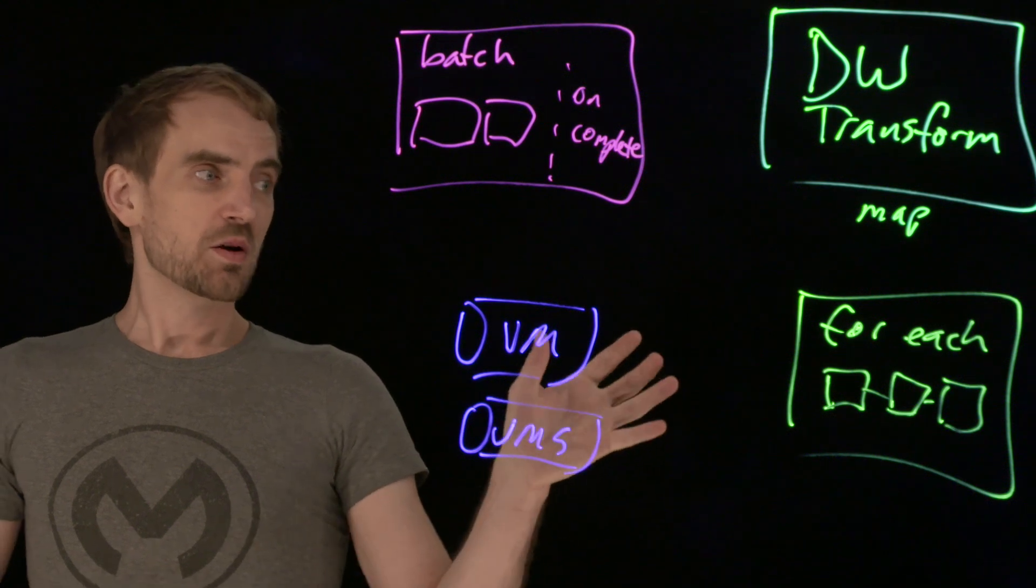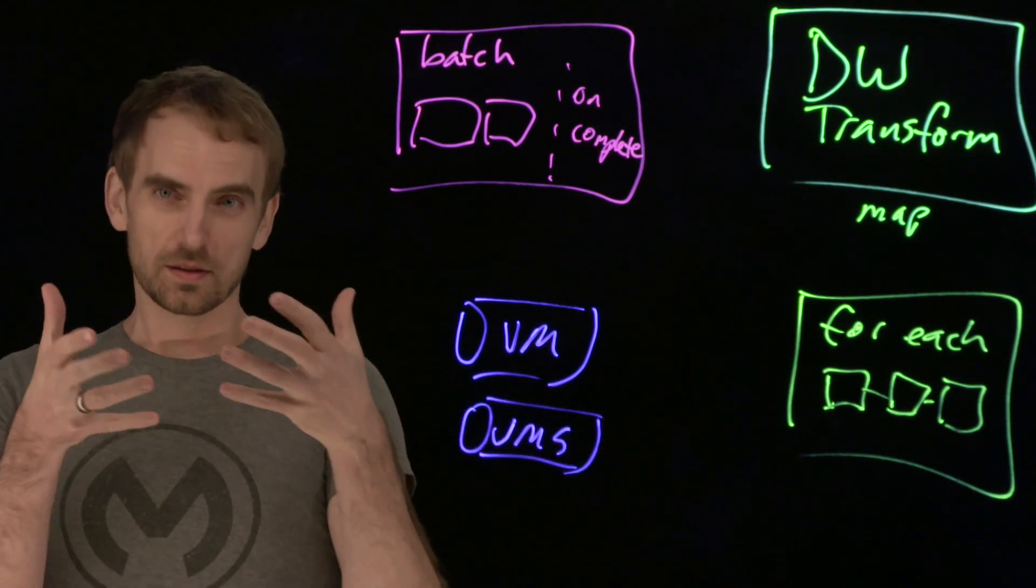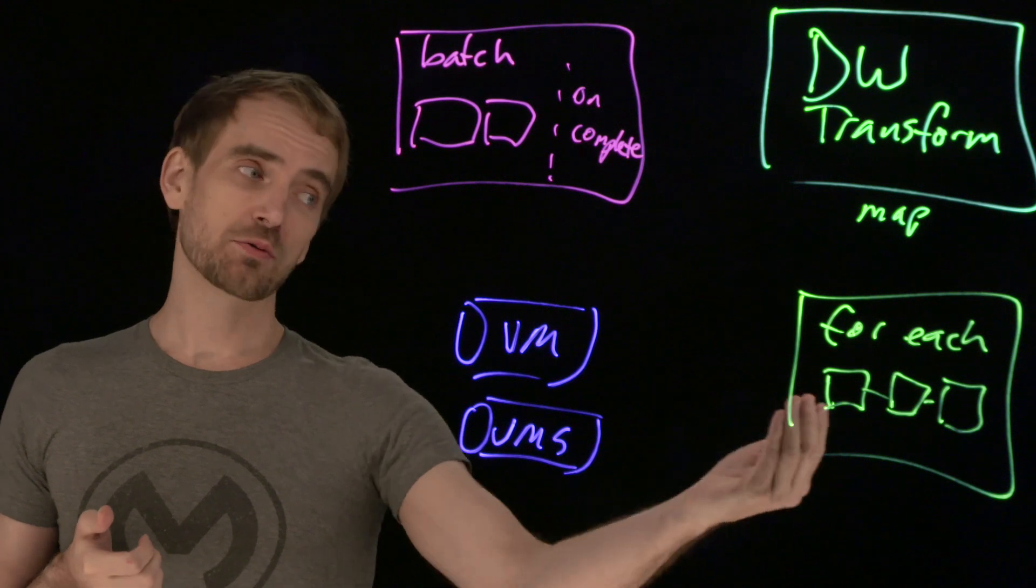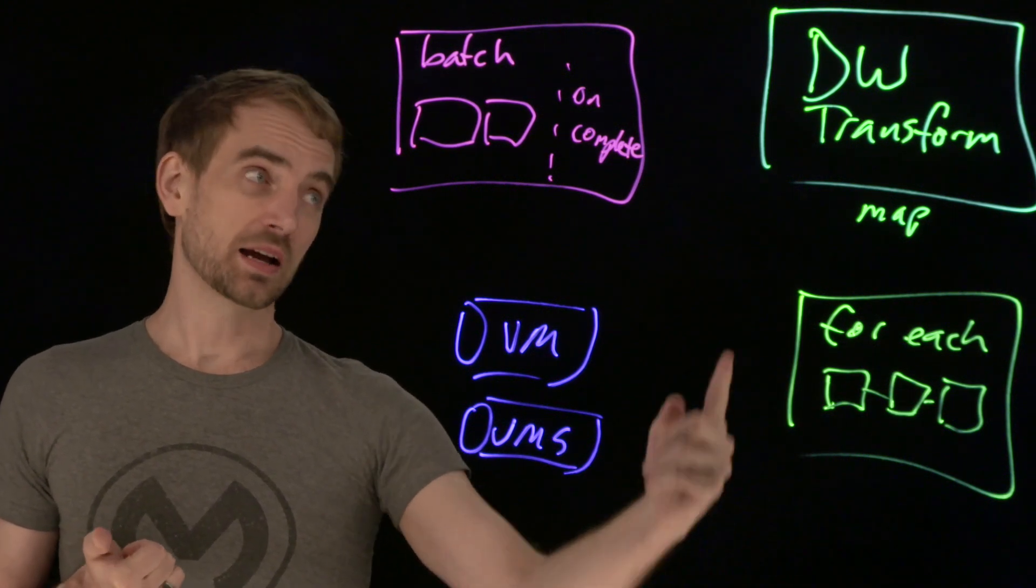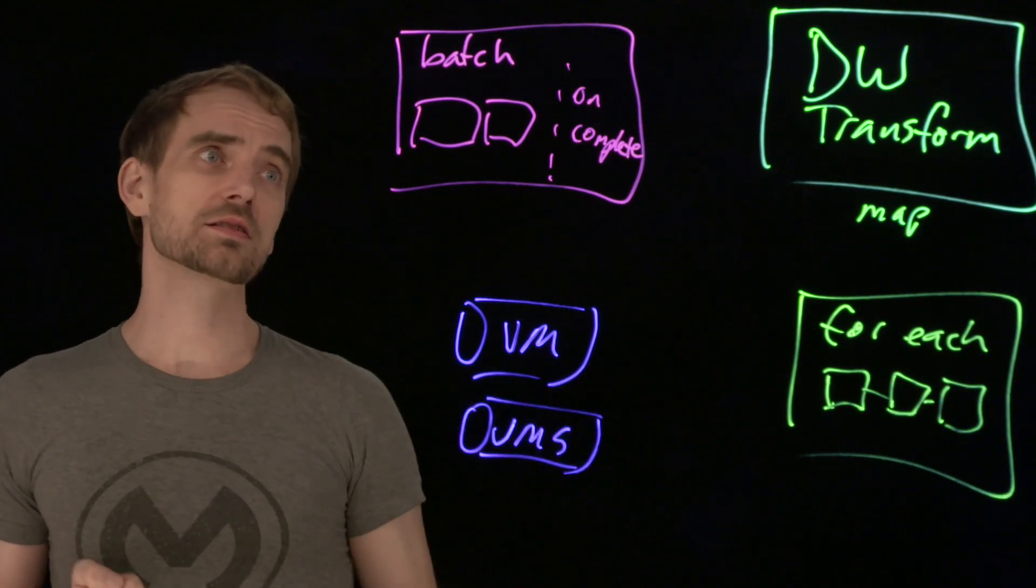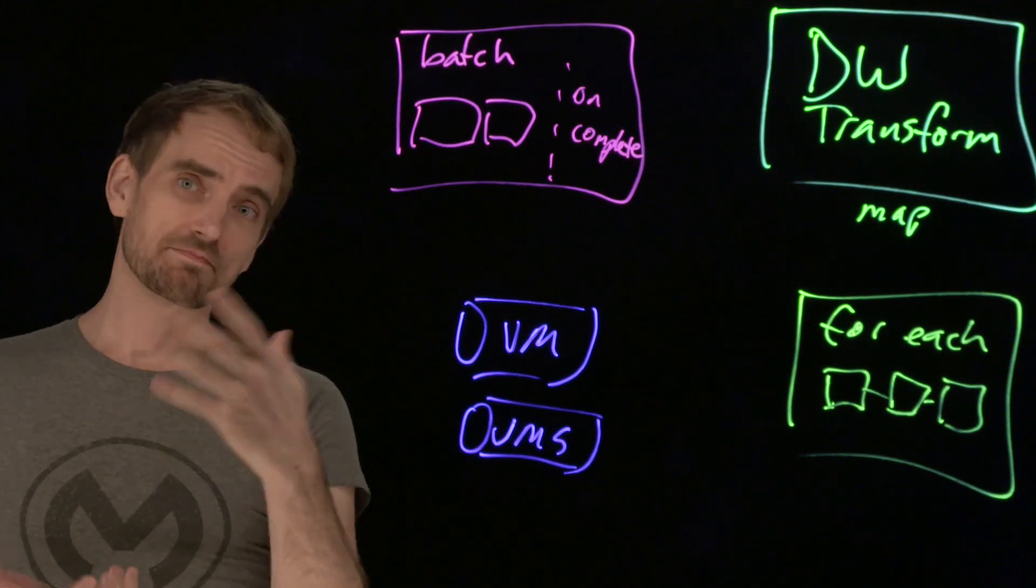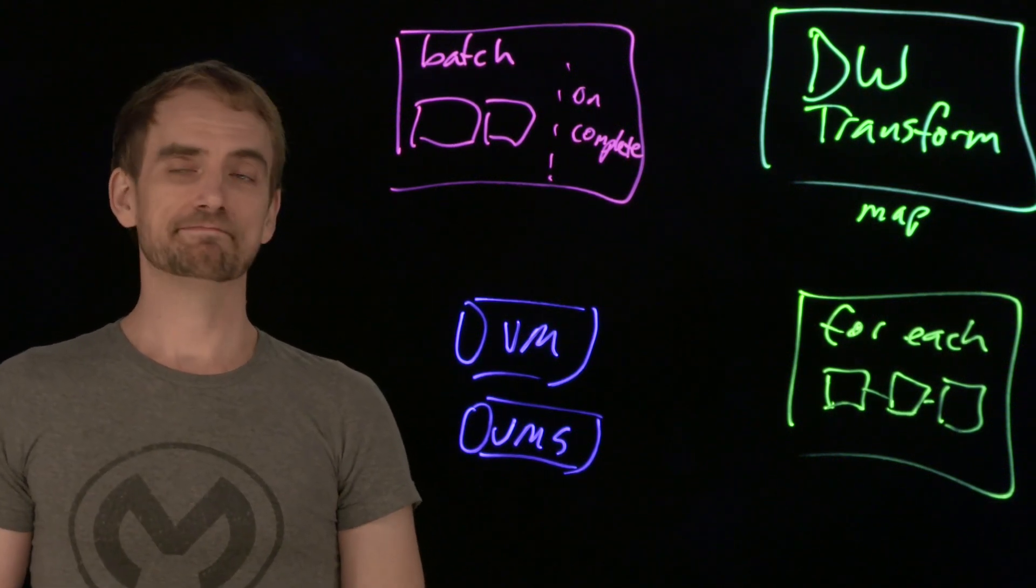Just to remember that when you're looking to see what's coming out of these, then for each is going to have whatever was passed into it. It doesn't change the structure, unlike the data weave transform, which does. And as far as batch, again, whatever was in there at the start, you're not going to be changing the structure.